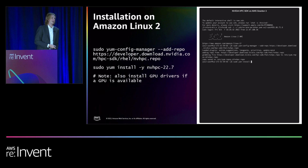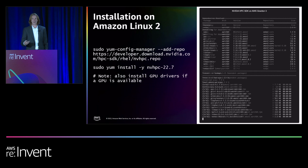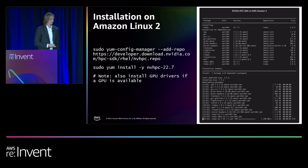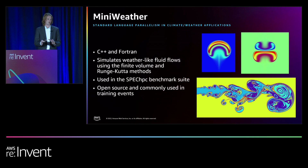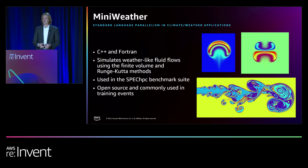After installing, I wanted to test it out. My methodology was to take the MiniWeather app and build it in as many different ways as possible for as many different AWS instances as possible. MiniWeather is a great tool because it involves both C++ and Fortran and solves a semi-realistic weather problem — not just a microbenchmark. It's also part of the SPEChpc benchmark, so doing well here is certainly not a bad thing. It's open source and frequently used in training events, so you might be able to relate to these results.